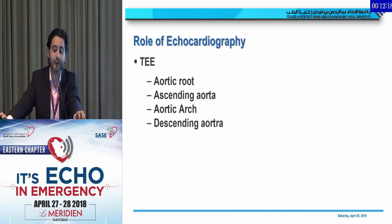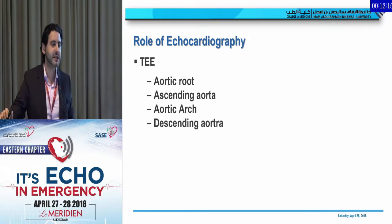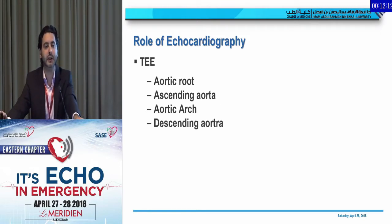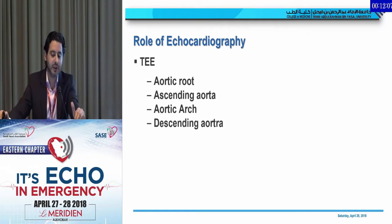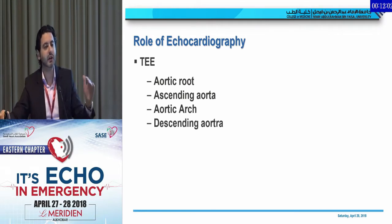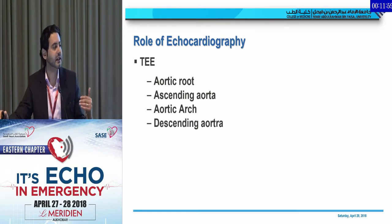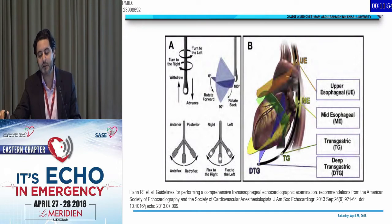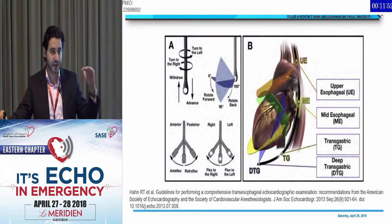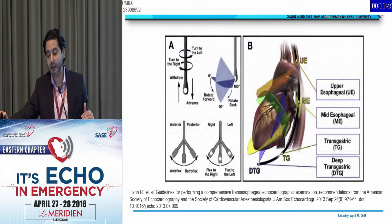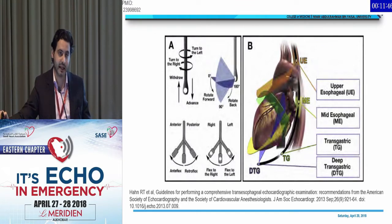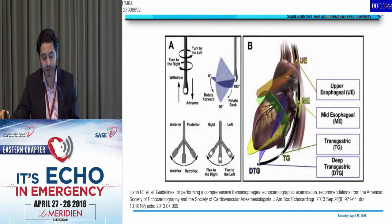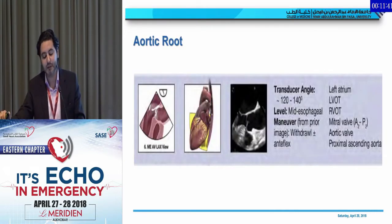Regarding the role of echo: transthoracic echo has not much to offer in atherosclerosis of the aorta, so we focus on TEE. The aorta has aortic root, ascending aorta, aortic arch, and descending aorta. We use upper esophageal, mid-esophageal, transgastric, and deep transgastric positions. We also angulate by changing the angle, rotate right and left, and flex and anti-flex.